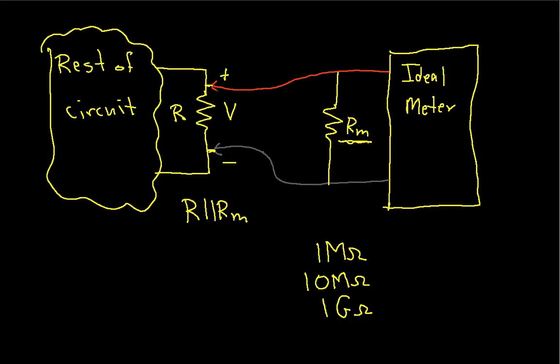And because the voltage across R is actually now the voltage across this parallel combination, if RM is not so large that this parallel combination is approximately R, then attaching my meter to do the measurement will change the measurement I get.